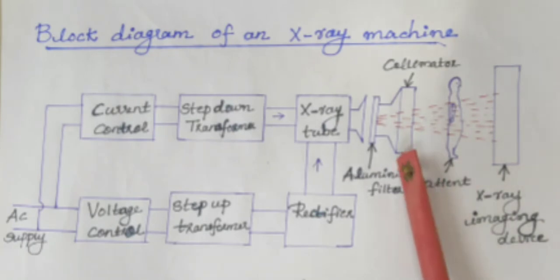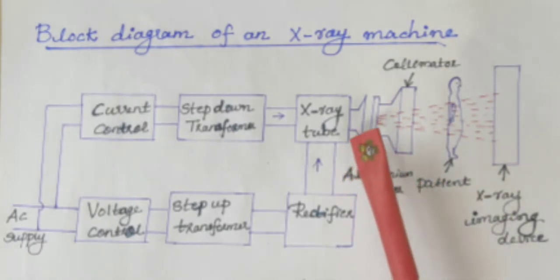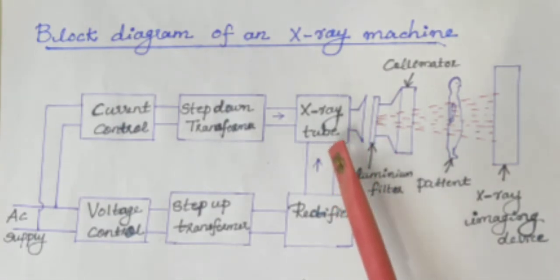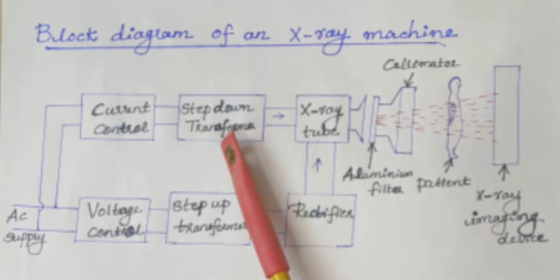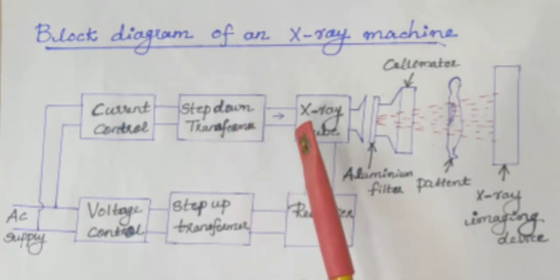Cathode is supplied with a low AC voltage and anode with a high DC voltage. In order to supply low AC voltage to the cathode, AC supply is stepped down using a step-down transformer and given to the cathode.